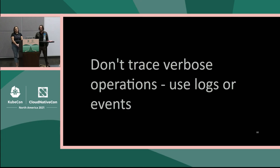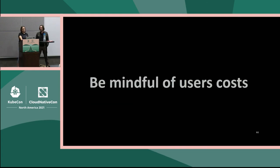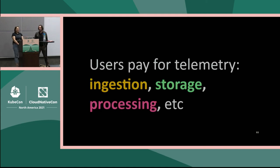Don't trace verbose operations — if something is verbose, use logs. Users can tweak the log level to get more or less of it. If you want to share something with users but it's not a span, add an event on the span instead of creating a new span. Also be mindful of user costs — they pay for telemetry a lot: ingestion, storage, processing, and everything. If you're not sure a new thing will solve a problem for the majority of your users, maybe don't instrument it, or put it behind a feature flag before you learn more.